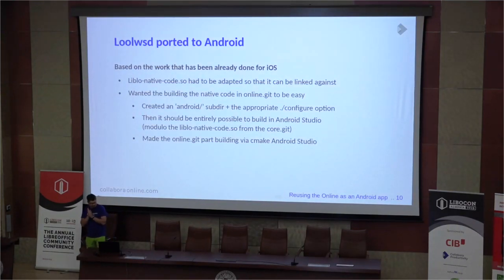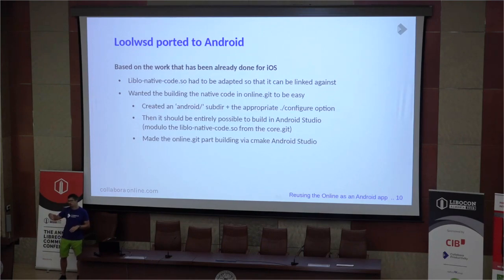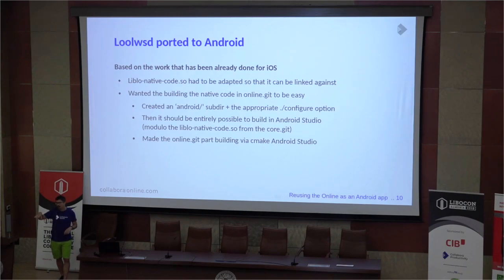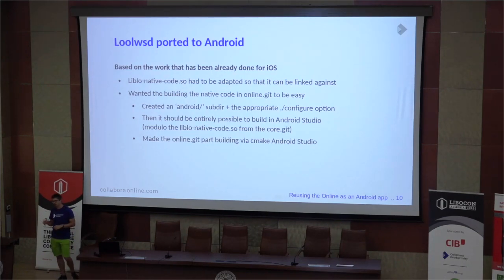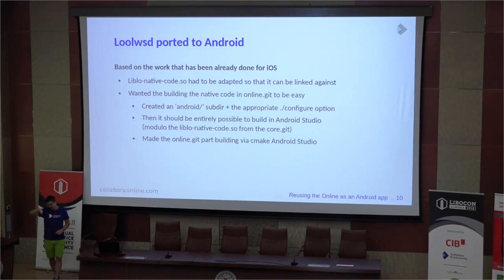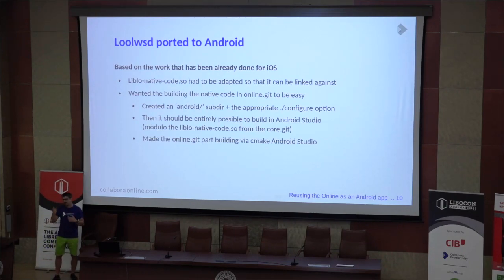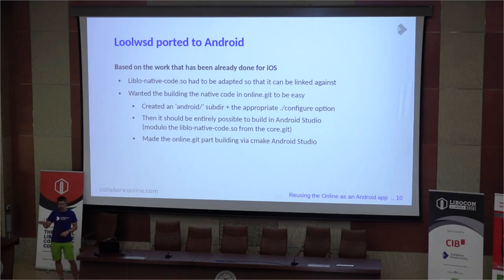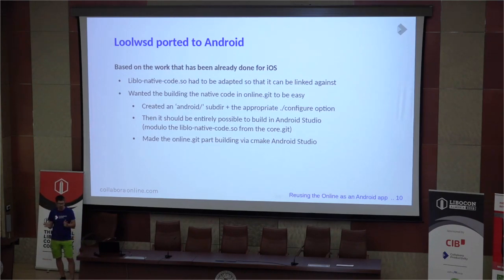What needed to be done? First, it was necessary to adapt how things are built. So far, the entire Android application was being built in core.git — there's an Android folder there, and when building for Android you set up configure to cross-compile, and at the end you had an APK somewhere in the build. I wanted to build on top of this as much as possible.